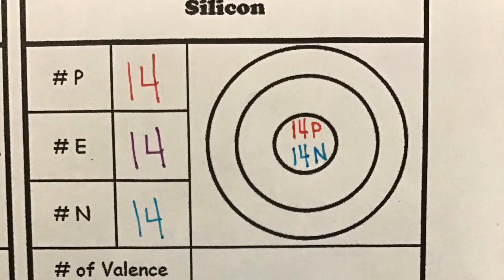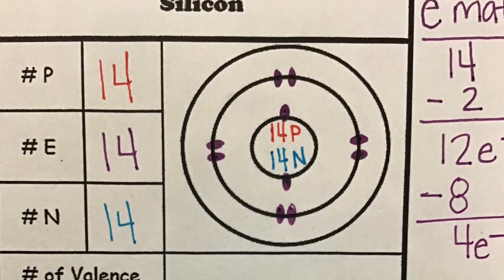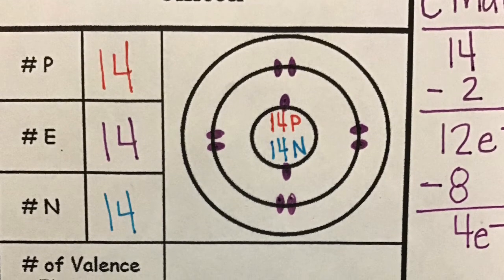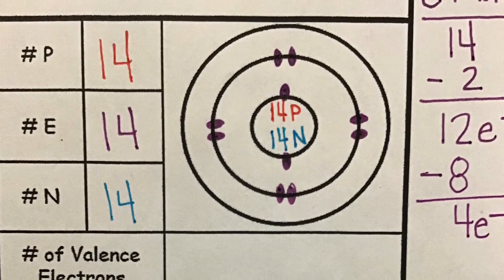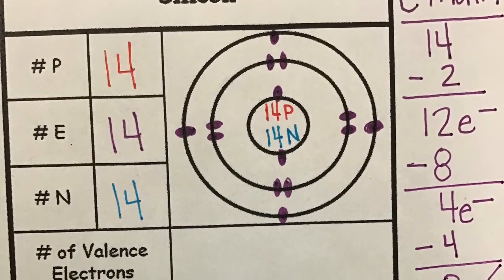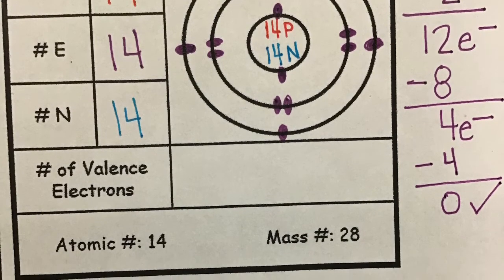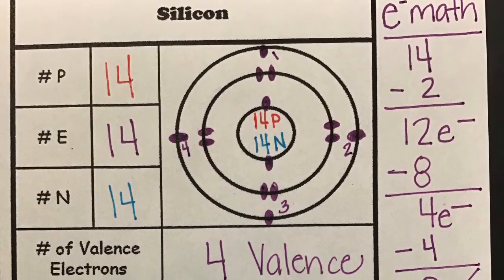Now to the electrons. We will be drawing 14 electrons. The first energy level can hold two electrons before it's full leaving us with 12 electrons. The second energy level can hold eight electrons leaving us with four electrons remaining. The last four electrons will go in the third energy level and these will be our valence electrons.